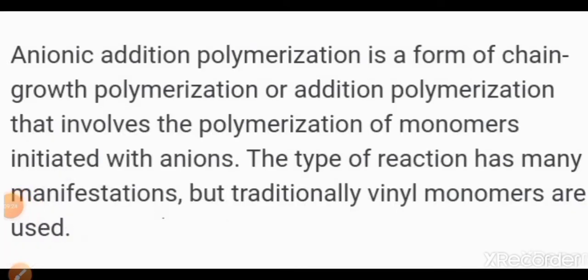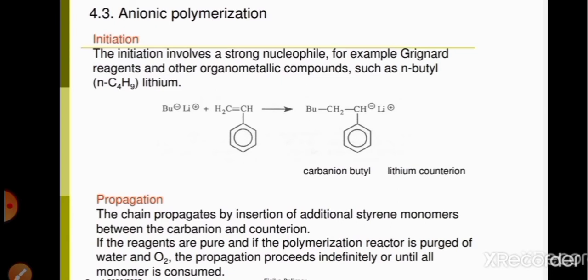The next type of ionic polymerization is anionic polymerization — polymerization initiated by anions. In the first step, initiation, a strong nucleophile is needed. Grignard reagents or other organometallic compounds are used. Here we use n-butyl lithium. One carbon from n-butyl carries a negative charge, and a positively charged lithium is bonded to it. The negatively charged carbon in n-butyl acts as a nucleophile, which bonds with the CH2 of styrene.